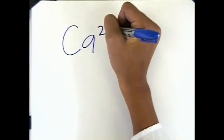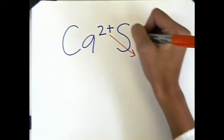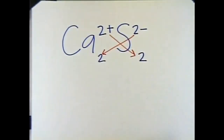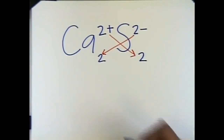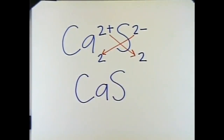Watch what happens when we use the crisscross method for calcium sulfide. Calcium has a +2 charge and the sulfide ion has a -2 charge. Crisscrossing the charges gives Ca₂S₂, but a correctly written ionic formula is the simplest ratio of ions. So this formula simplifies to CaS. When writing an ionic formula, if the subscripts are the same, omit them so the formula is in the simplest ratio possible.